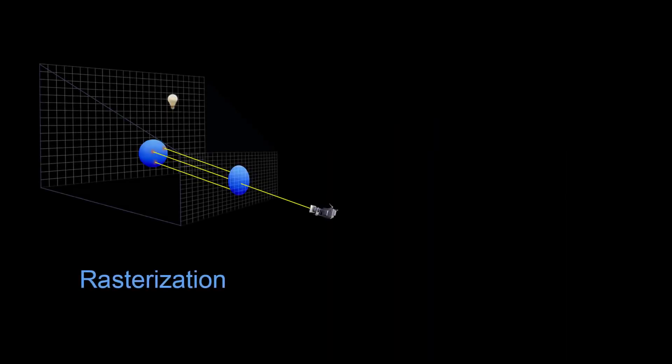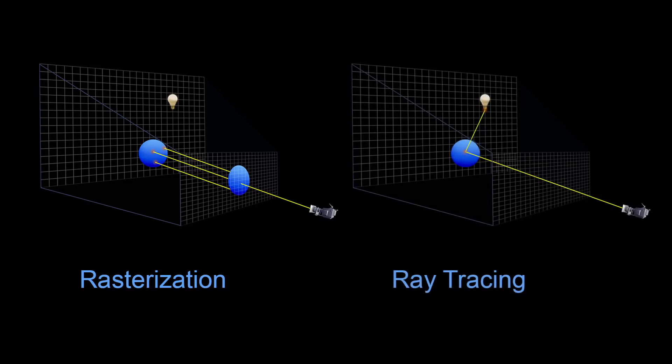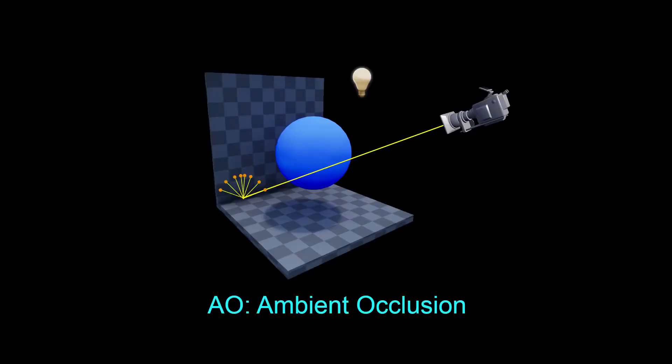With traditional rendering, the process of rasterization is typically utilized, whereby objects within a scene are created by a virtual mesh of triangles. In contrast, ray tracing relies on a system of bouncing photons from object to object before reaching the camera to produce an image. This leads to some very big advantages in visual quality.